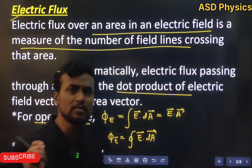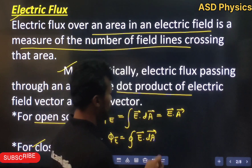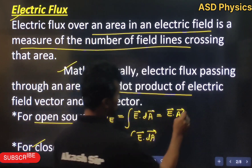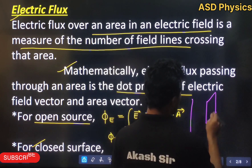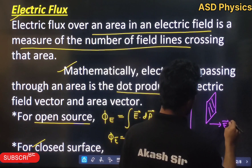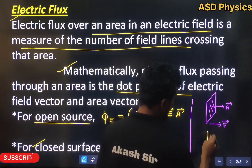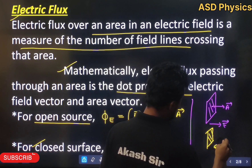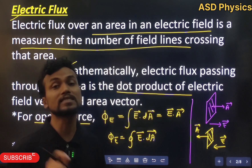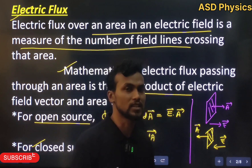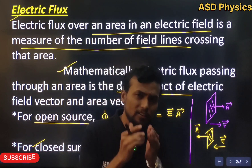We deal with two kinds of area: open area and closed area. In case of an open surface, whatever is the direction of the electric field, we take the area vector in the same direction. For example, if the electric field is pointing to the right, we take the area vector to the right; if the field is to the left, the area vector is also to the left. For a closed surface, the area vector will always point outward.